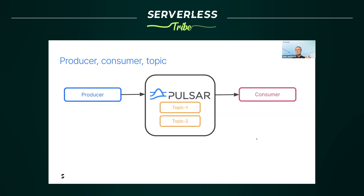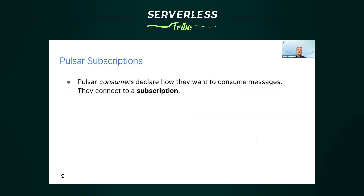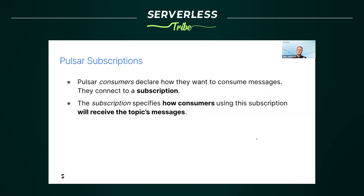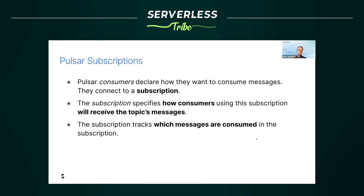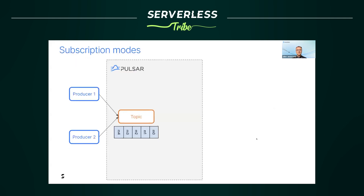You can find producers, consumers, and topics in most broker technologies like Kafka, RabbitMQ, and Pulsar. However, Pulsar brings an additional concept: the subscription. Pulsar consumers declare how they want to consume messages by connecting to a subscription. The subscription specifies how consumers will receive the topic's messages and tracks which messages have been consumed. One topic can have several subscriptions at the same time — that's very important. We achieve unified messaging and streaming through subscriptions.